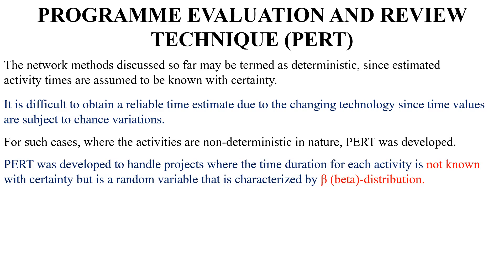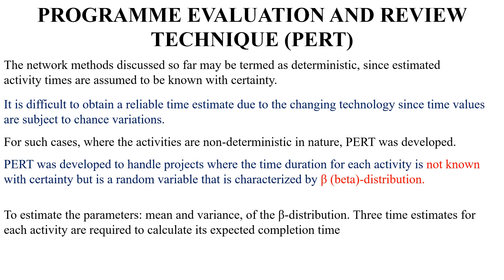PERT was developed to handle projects where the time duration for each activity is not known with certainty, but is a random variable characterized by a beta distribution. To estimate parameters such as mean and variance of the beta distribution, three time estimates for each activity are required to calculate its expected completion time.